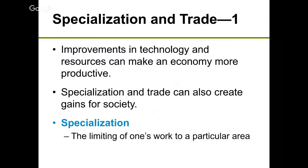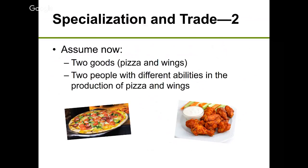Specialization is the limiting of one's work to a particular area. You may have learned this in history class — Henry Ford's assembly line had workers specializing in just one part of car production, making them more efficient. McDonald's did the same: instead of employees doing everything, they're trained specifically for one task, allowing more burgers and fries to be produced with a fixed number of employees.